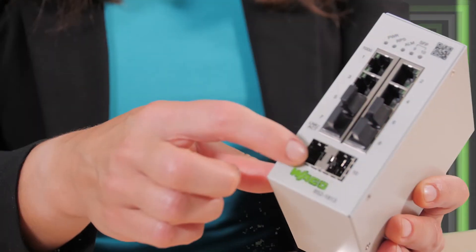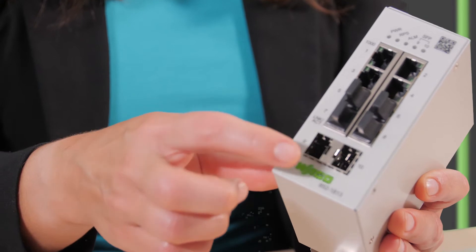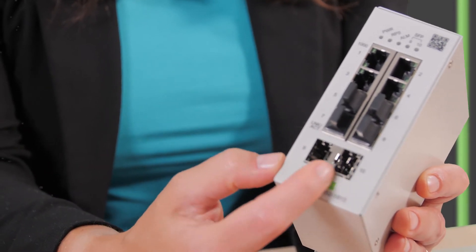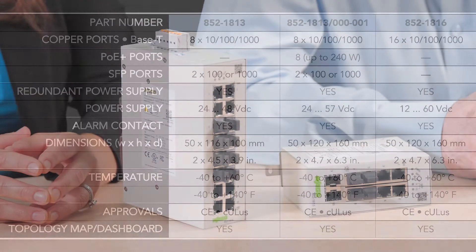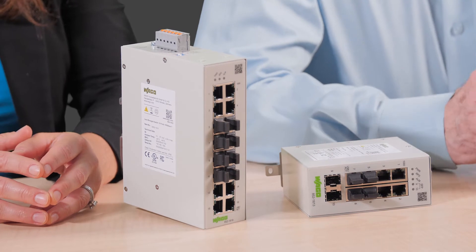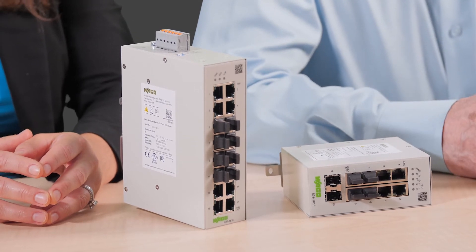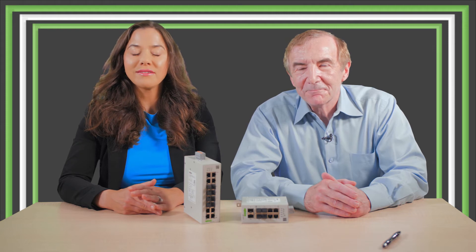The 852-1813 is a configurable industrial Ethernet switch with eight standard ports for copper-based twisted pair connections along with two fiber optic ports. It has a rugged housing, redundant power supply, relay-based function monitoring, and streamlines network management.